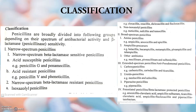Moving to the second group within narrow-spectrum: narrow-spectrum penicillins with anti-beta-lactamase properties, meaning they resist the activities of beta-lactamase. In that group we have isoxazolyl penicillins — examples are cloxacillin, oxacillin, dicloxacillin, and flucloxacillin — and non-isoxazolyl penicillins, which include methicillin, nafcillin, and temocillin.